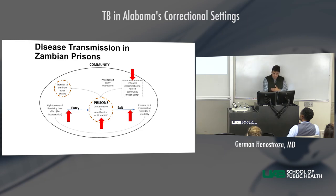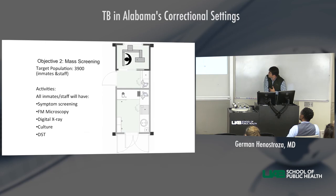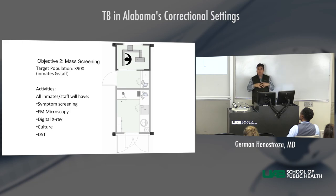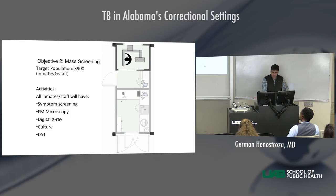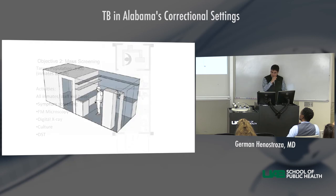What we did in Zambia was implement the system using a container — a tool designed specifically for this purpose, half lab and half X-ray. This container provided the capacity for fluorescent microscopy, digital X-ray, culture capacity, and drug susceptibility testing. The samples were sent to our lab. The most interesting part was that X-rays needed interpretation, and when they needed to be sent somewhere for reading, we used cell phone networks.